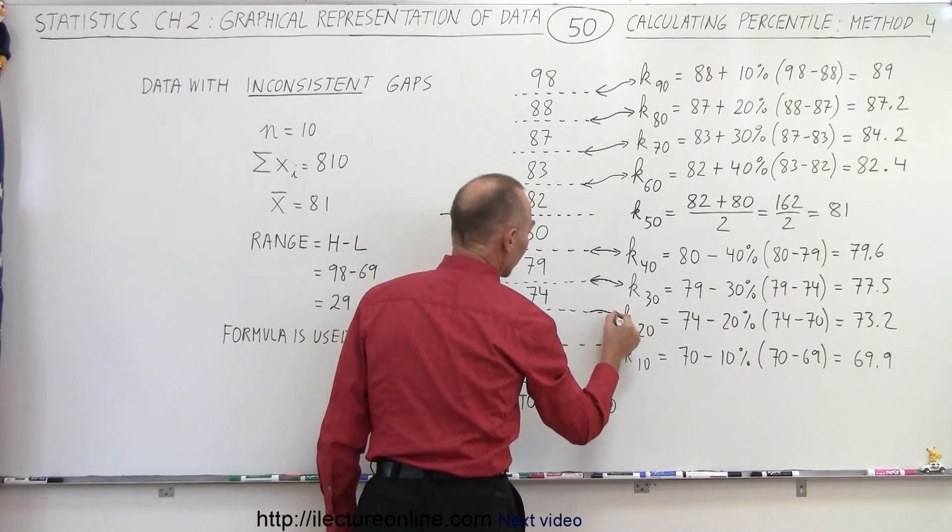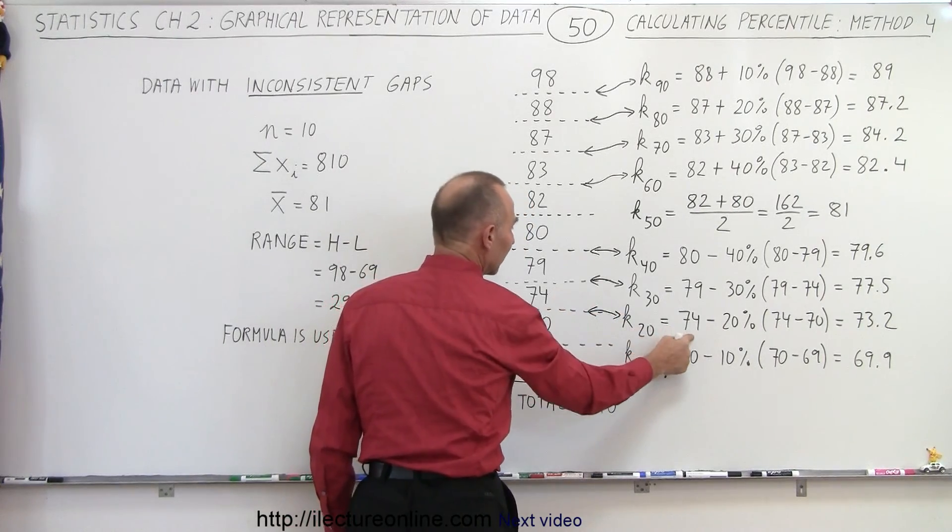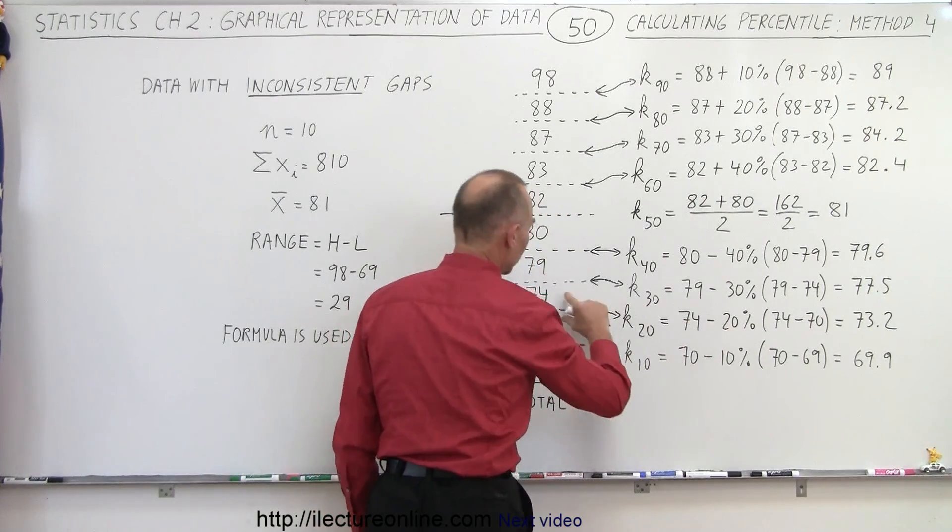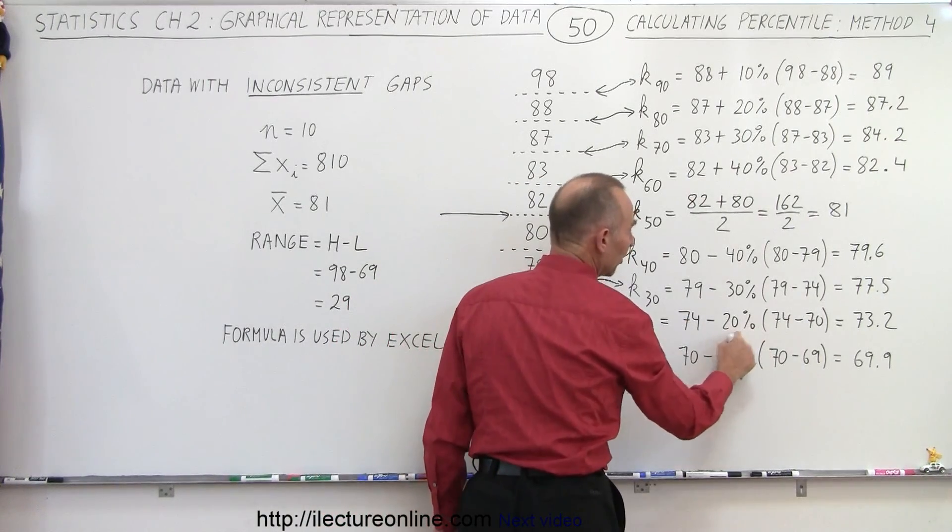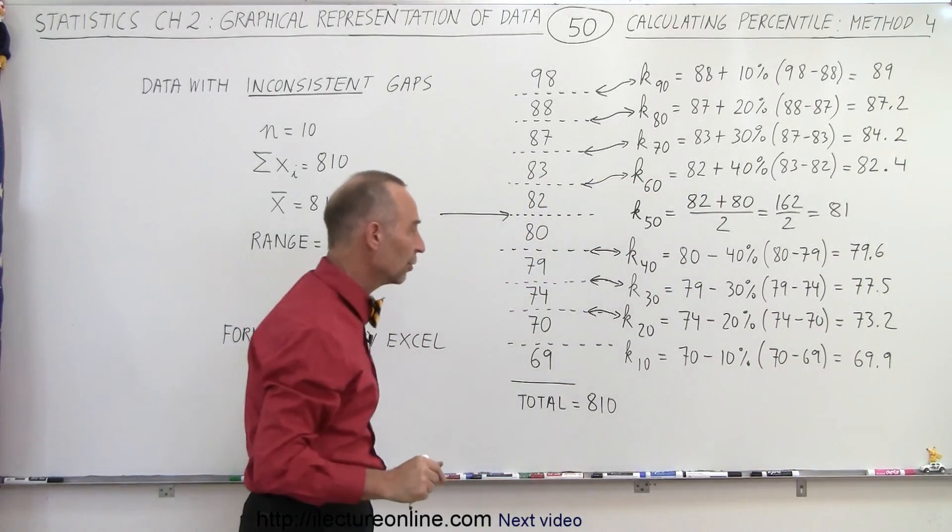Then to get the 20th percentile, we take the larger of the two values on either side of the boundary, 74. Subtract 20% of the difference, which is 4. 20% of 4 is 0.8. Subtract 0.8 from 74, you get 73.2.